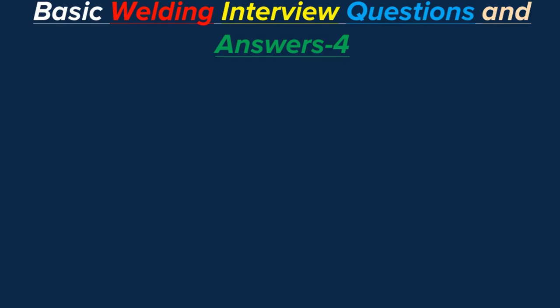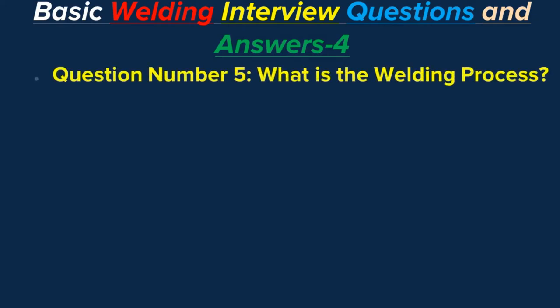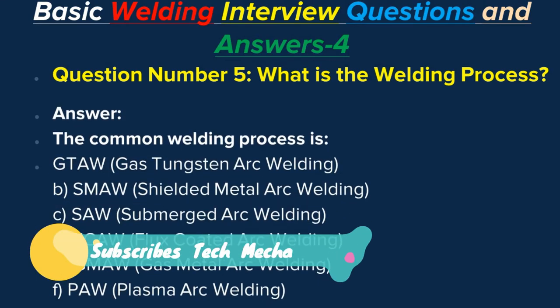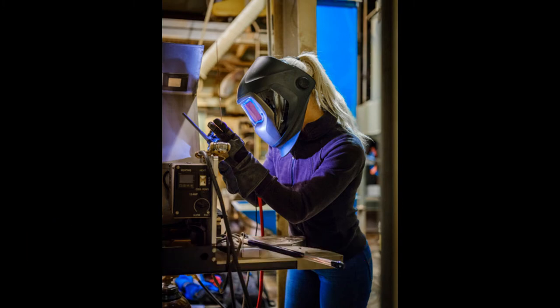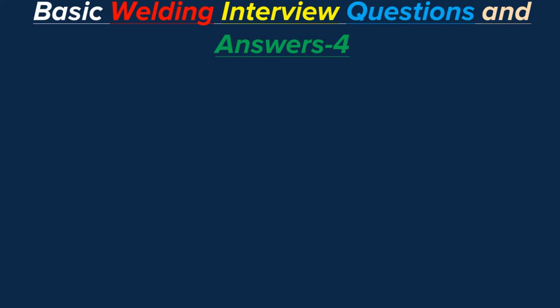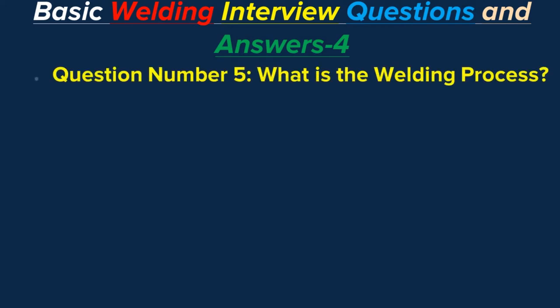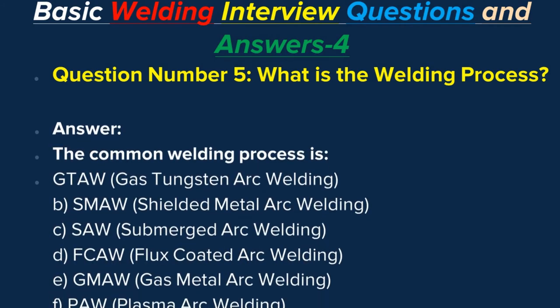Question number five: What is the welding process? Answer: The common welding processes are: A — GTAW, gas tungsten arc welding; B — SMAW, shielded metal arc welding; C — SAW, submerged arc welding; D — flux coated arc welding; E — GMAW, gas metal arc welding; F — plasma arc welding.